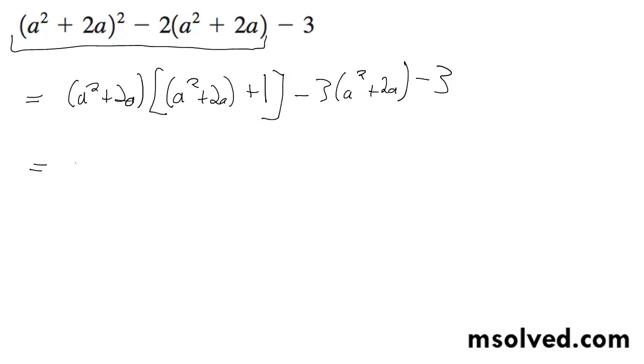Continuing on here, we get a squared plus 2a minus 3a squared plus 2a plus 1.